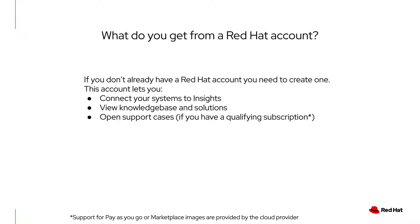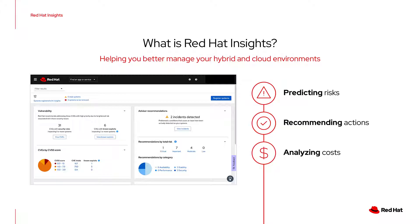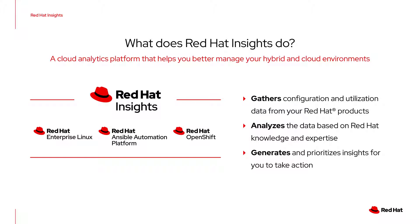You may not be familiar with Red Hat Insights, so I'll quickly explain what Insights does for you. Red Hat Insights continuously analyzes platforms and applications to predict risk, recommend actions, and analyze costs to help you control your IT spending — all in order to help you better manage your hybrid cloud environments. Insights gathers configuration and utilization data, then analyzes and provides insights from that data across all of the supported platforms. I'm focusing on Red Hat Enterprise Linux, but Insights also supports Red Hat Ansible Automation Platform and Red Hat OpenShift. Insights analyzes the data and returns the results to you via the web UI, the API, or integrations through notifications or webhooks. This gives you a Red Hat view of what you should prioritize taking action on from our unique experience supporting Red Hat products.